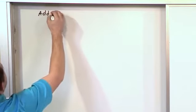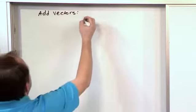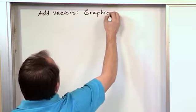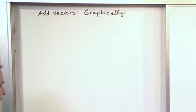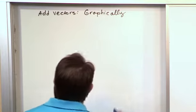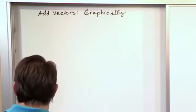So add vectors. The first way is graphically. And usually this is what people are taught early on. And then after you get that out of your system, you start to use numbers to represent everything. But for now, we're just going to review real quick.